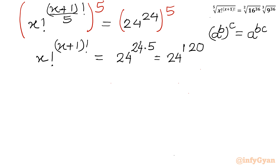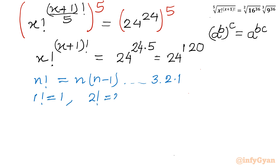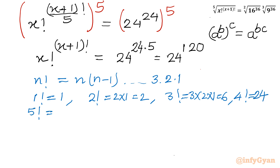Now factorials will come into the picture. We know that n factorial can be written as n times n minus 1, down to 3 times 2 times 1 — it is the multiplication of the numbers from 1 to n. For example: 1 factorial is 1, 2 factorial is 2, 3 factorial is 6, 4 factorial is 24, and 5 factorial is the multiplication of all numbers from 1 to 5, which is 120. So if we look at our equation, 120 is written in the power and 24 is written in the base.